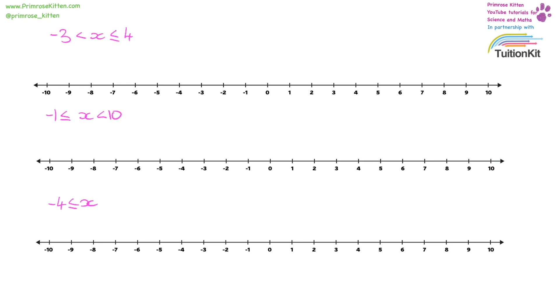Here we have some inequalities to express on a number line. So we need to start with minus 3 with an open circle because it is not equal to. We are going greater than minus 3 up to 4 and there we need to fill in our circle because it could be equal to 4 and then with a ruler we need to join that up.